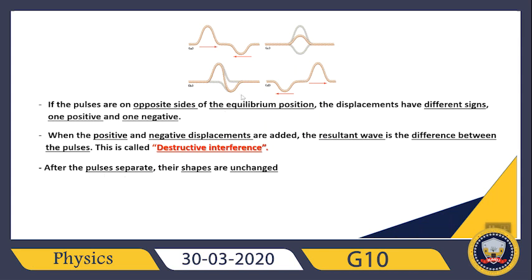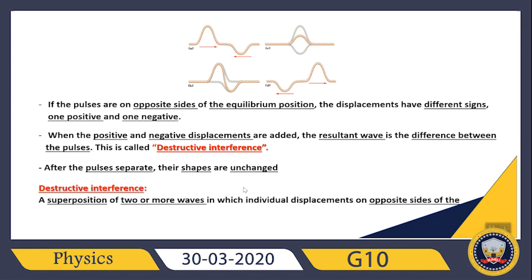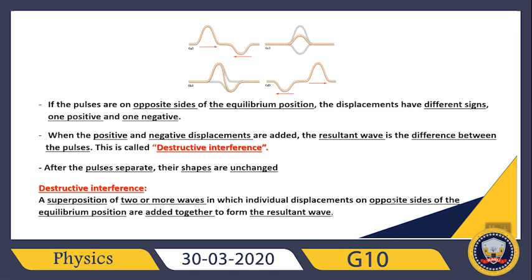After the pulses separate from each other, their shapes are back again and unchanged — just like in constructive interference. One continues back to the left side while the other continues back to the right side. Nothing changes. Destructive interference means a superposition of two or more waves in which individual displacements on opposite sides of the equilibrium position are added together to form the resultant wave, unlike constructive interference where both are on the same side.